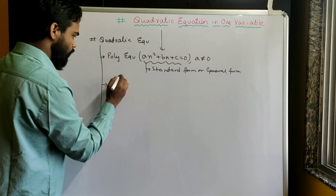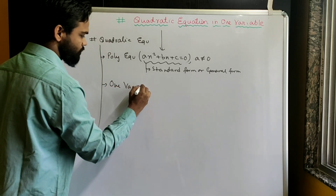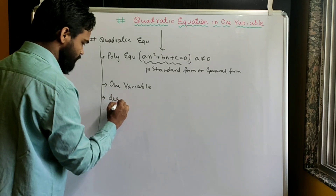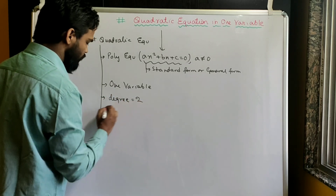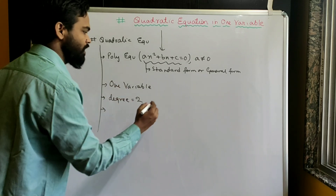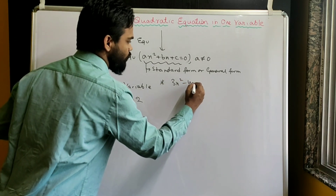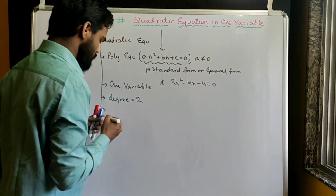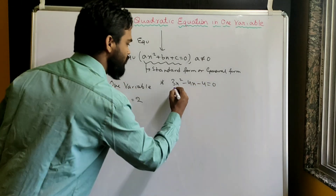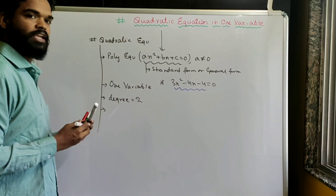Notice that there is one variable, and the degree of this polynomial is 2. For example, 3x² - 4x - 4 = 0 is a polynomial equation of degree 2, so it is known as a quadratic equation.